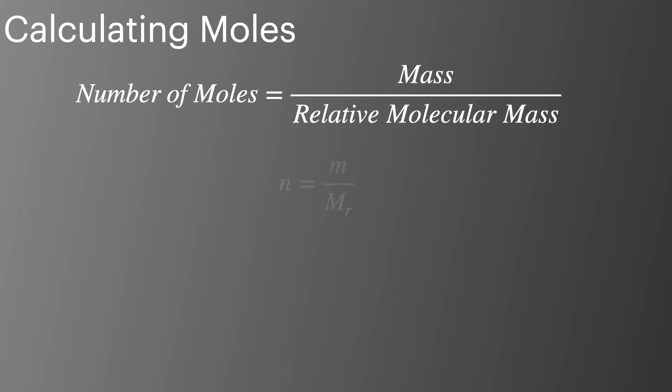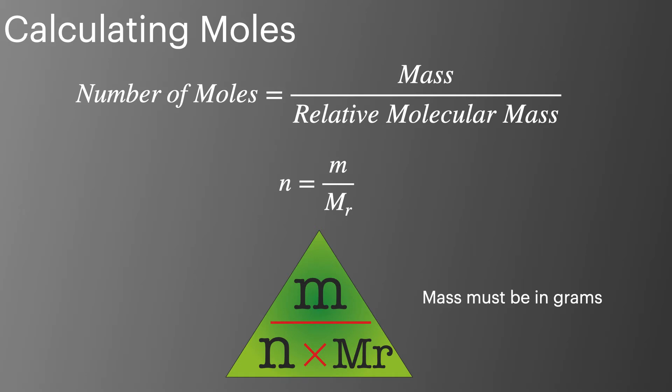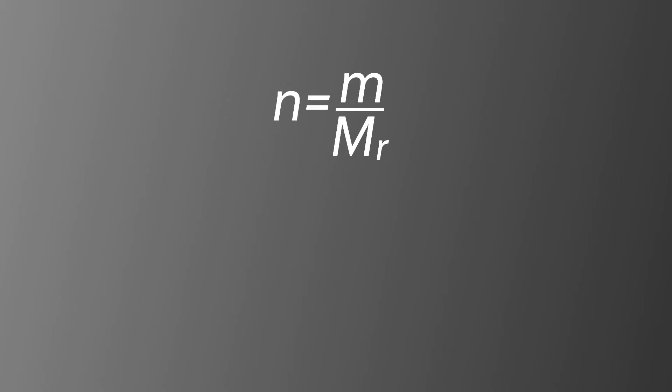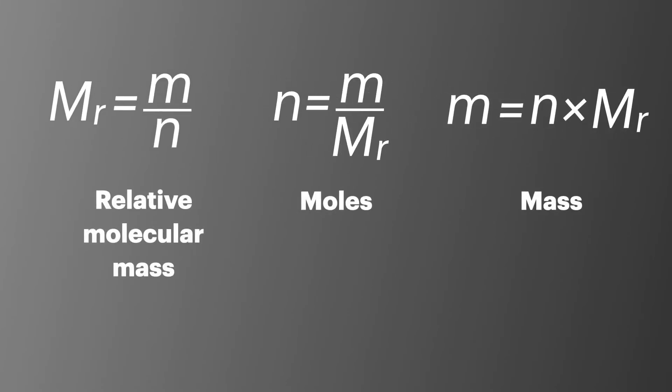We can calculate the number of moles of any element using this equation. This can be simplified to n equals m over Mr. If you struggle to rearrange equations, it can be simpler to place them in an equation triangle, allowing you to cover the required value leaving you the calculation you need to carry out. It's important that you remember to always put mass in grams into this equation. So we can rearrange the equation to give all three values: relative molecular mass, moles, and mass.